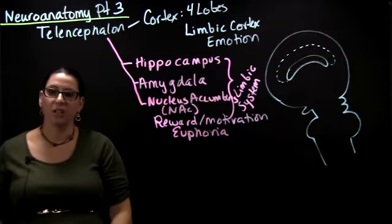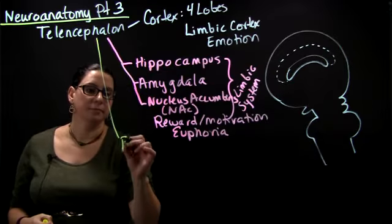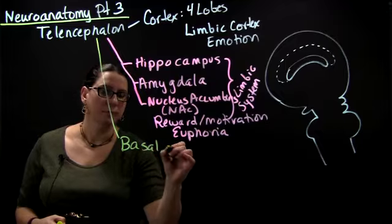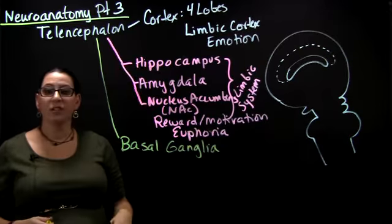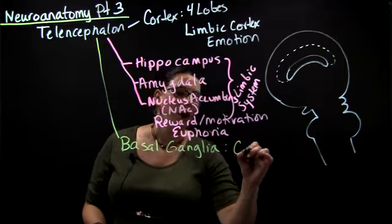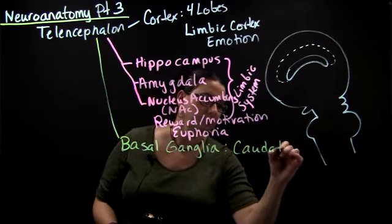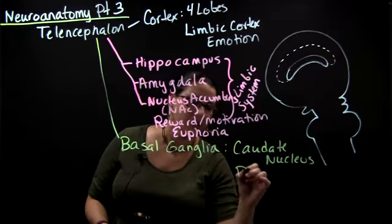Another subcortical brain region that's part of the telencephalon is the basal ganglia. This region has a couple of sub-regions in it. One is the caudate nucleus, and the other is the putamen.